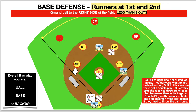Today we're looking at runners at first and second. We'll look at it hitting the ball to the right side of the field — mostly second base — and to the left side of the field which is shortstop. If the ball is hit to the first baseman on the right side of the infield, make sure the pitcher is covering first base. Anything hit to the right side, the pitcher probably should be going over and covering first base.